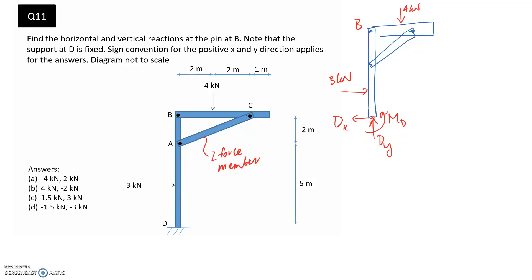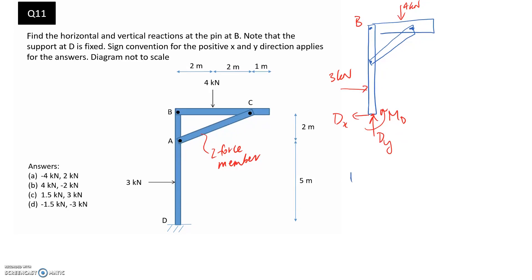I'm going to draw the free body diagram of just this top horizontal member. By doing that, I should be able to expose the force in pin B, which is the forces we're looking for to answer the question. I'm also going to expose the force acting through the two-force member. When we separate out just the horizontal member, we've got this 4 kilonewtons to carry down.